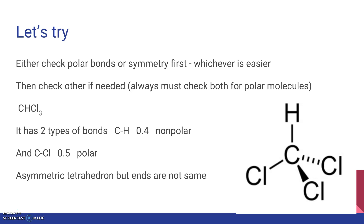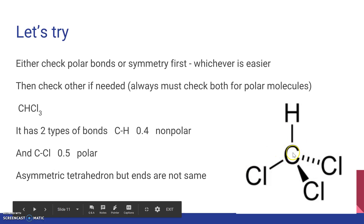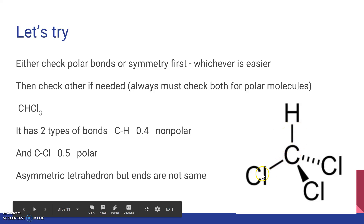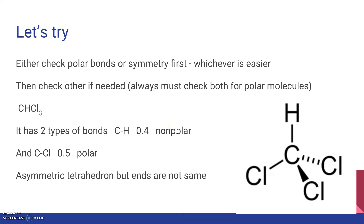Let's try it together with chloroform, which has a chemical formula of CHCl3. You can either check the polar bonds or the symmetry first, whichever is easier. It has two types of bonds: C-H and C-Cl. For C-H, the difference in electronegativity is 0.4, so that bond is nonpolar. But C-Cl has a difference of 0.5, so that is a polar bond. We have at least one polar bond — one of the criteria is met.